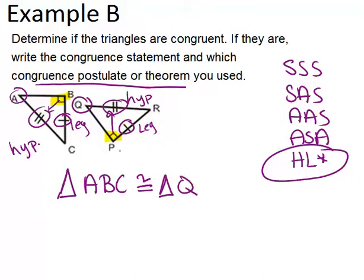B matches with P because they're both the right angles, and then the last letter is R. So triangle ABC is congruent to triangle QPR by HL congruence.